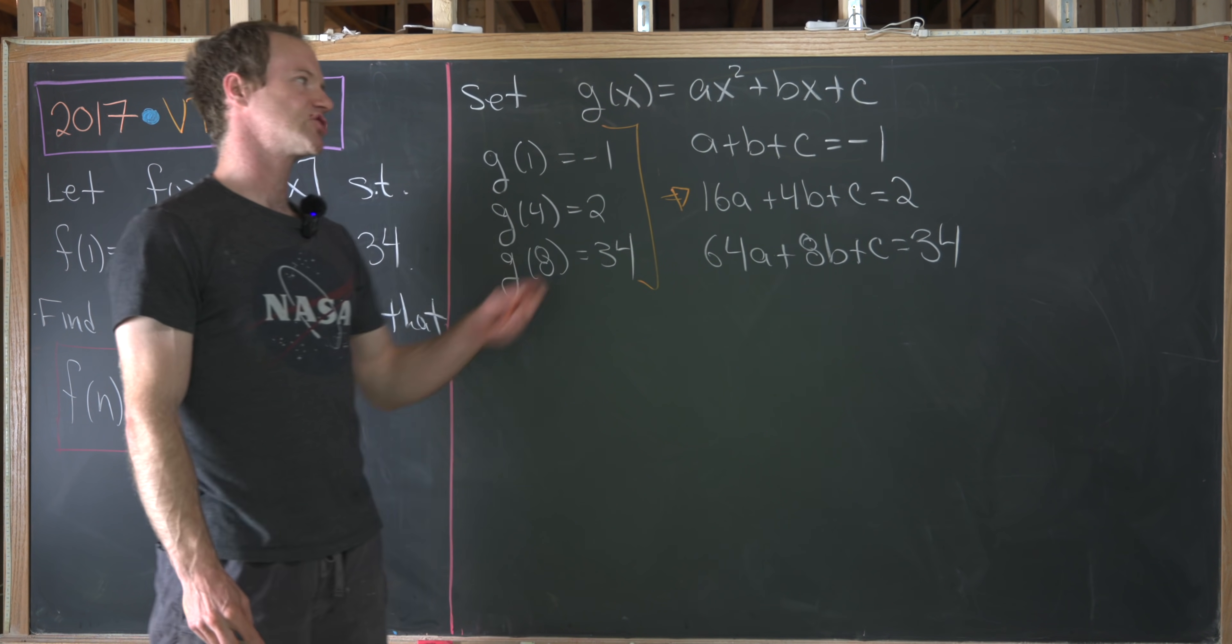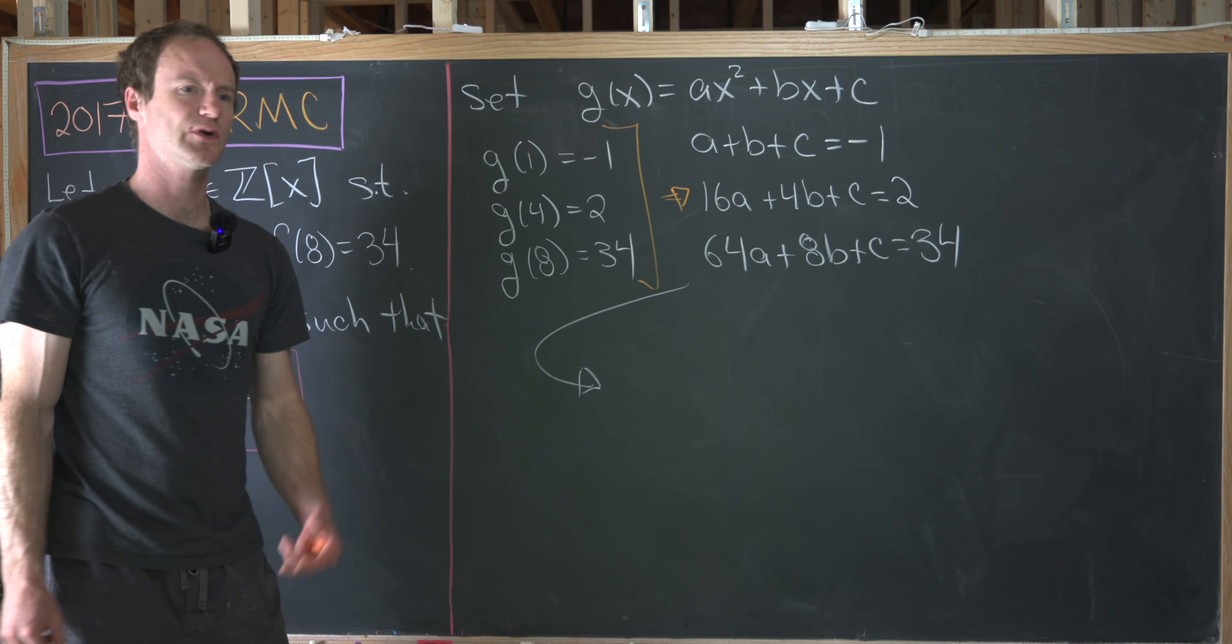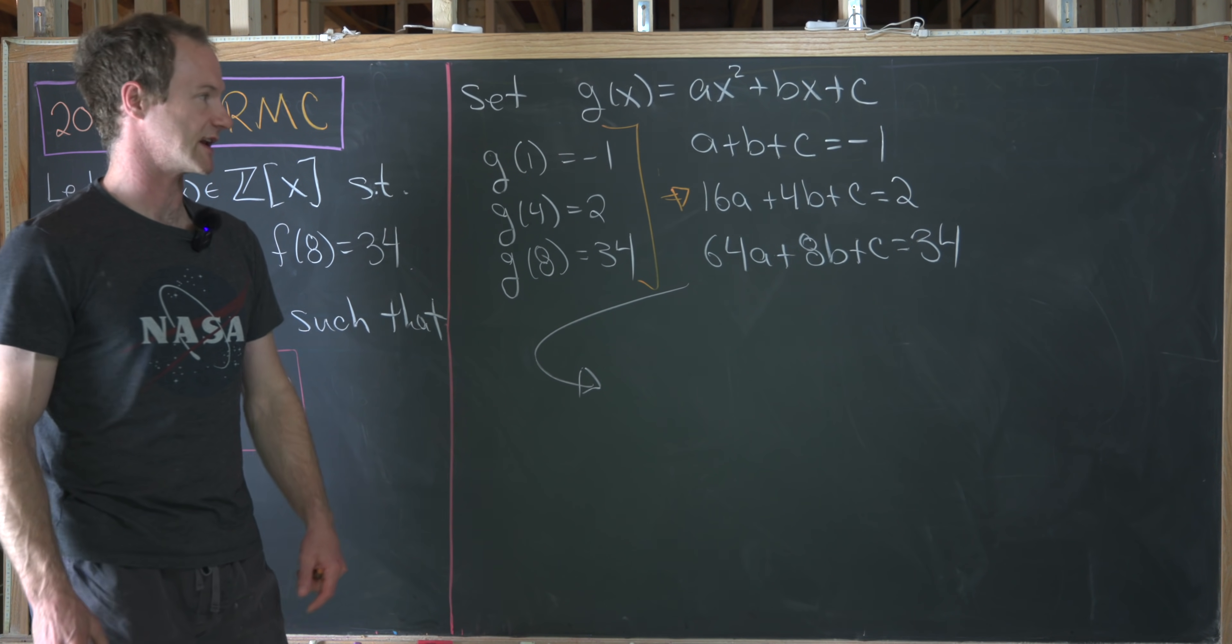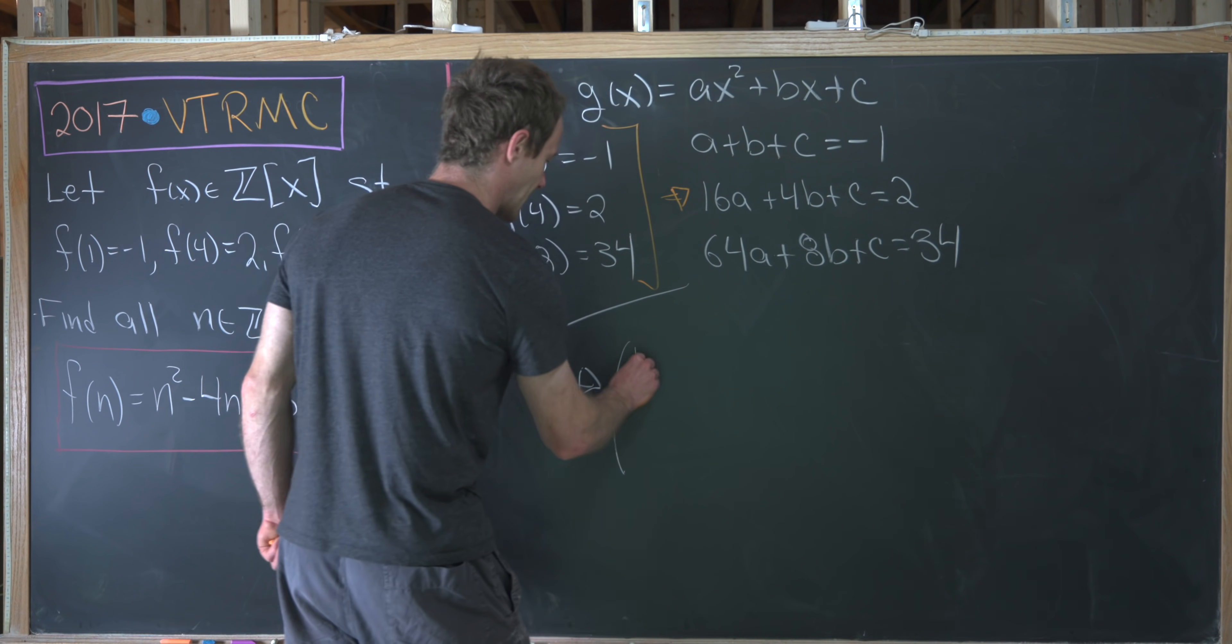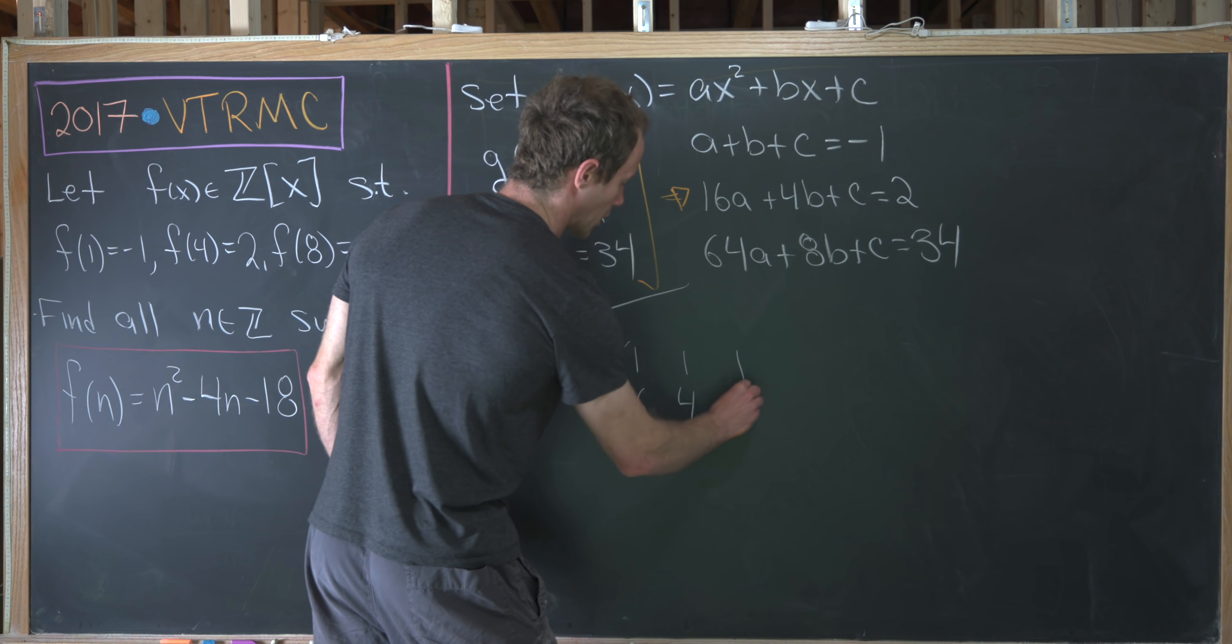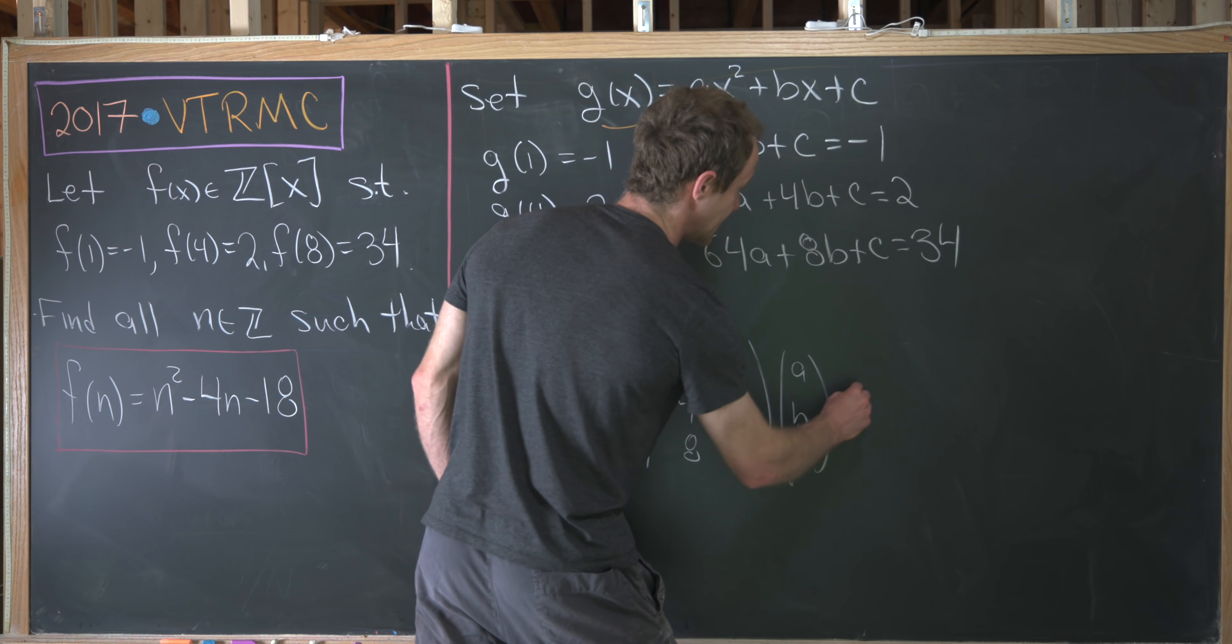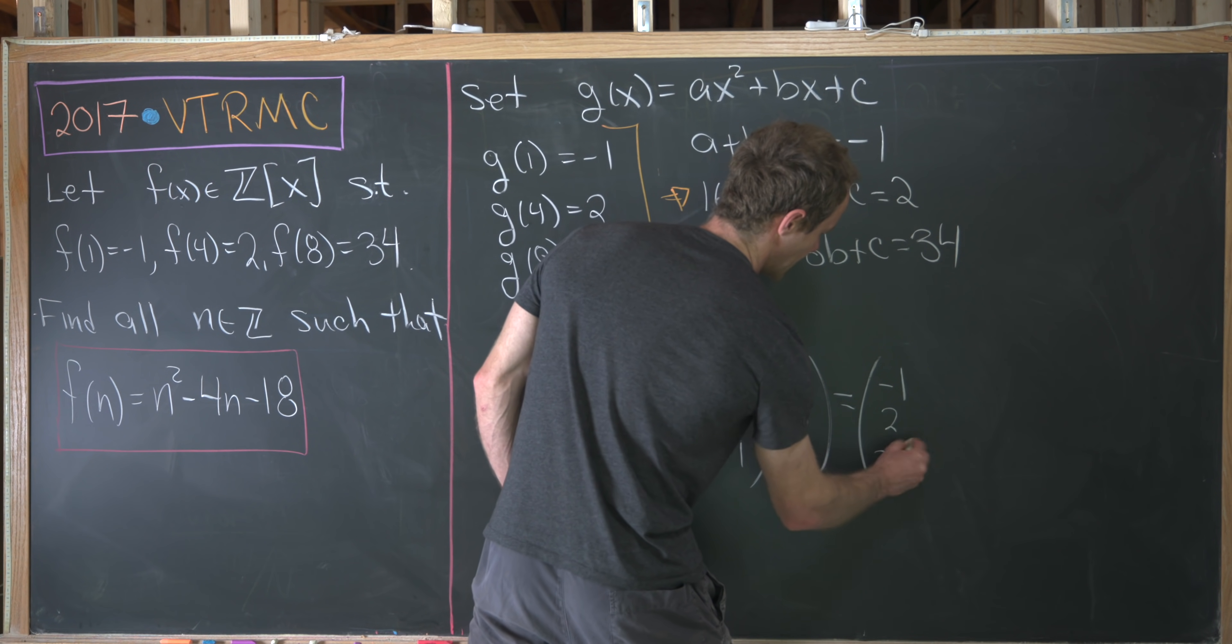Now there's a bunch of ways to solve this. I would maybe turn this into a matrix, which is a pretty appropriate way to do it because this is a college math contest and so you can assume some linear algebra probably. So that's going to be equivalent to the matrix equation given by [1,1,1; 16,4,1; 64,8,1] times the vector [a,b,c] equals the vector [-1,2,34].